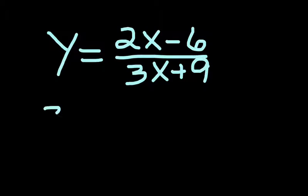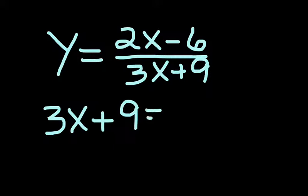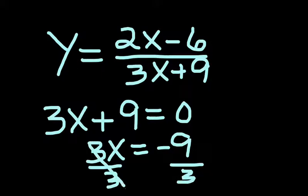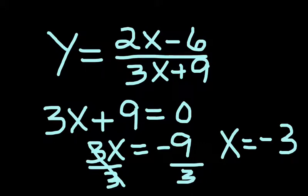then we're simply going to set the denominator 3x plus 9 equal to zero and solve this equation as usual. This is another linear equation. So we would move the positive 9 over, make it negative, divide both sides by 3, and then x would be equal to negative 3. So our vertical asymptote, our vertical line, would occur at x equals negative 3 this time. Let's look at one that might be a little more complex.